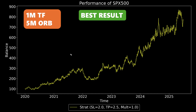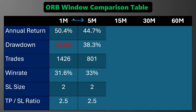I repeated the same exercise for the 5-minute ORB, simulating various take profit and stop loss targets — this is the best result out of all those simulations. The settings are actually exactly the same as the 1-minute ORB: it needed a 2x stop loss because otherwise trades got whipsawed out too much, and a 2.5x take profit gave the best balance between overall profit and drawdown. The 5-minute wasn't as profitable but did have a smaller drawdown. It also took far fewer trades. Interestingly, despite the same take profit target, the win rate was actually better than the 1-minute ORB — supporting the theory that the lower timeframe is just too noisy and trades get whipsawed out more frequently.